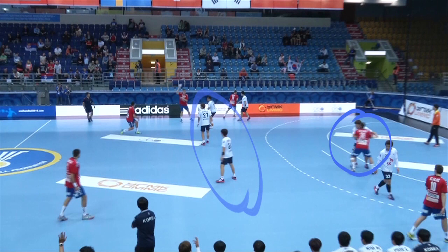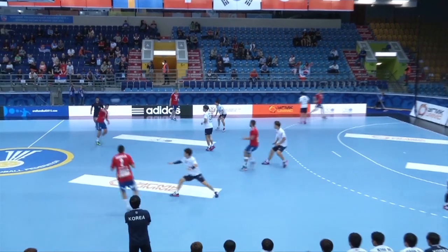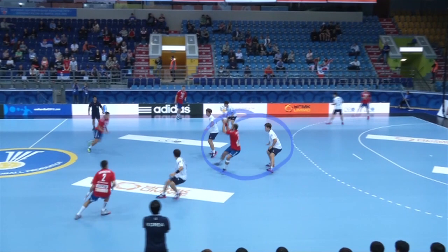Korea's offensive defense puts pressure on the Serbian backcourt players to reduce tactical offensive choices. The pivot runs forward to receive the ball, and this movement helps Korea's players apply higher pressure to reduce space for attackers.